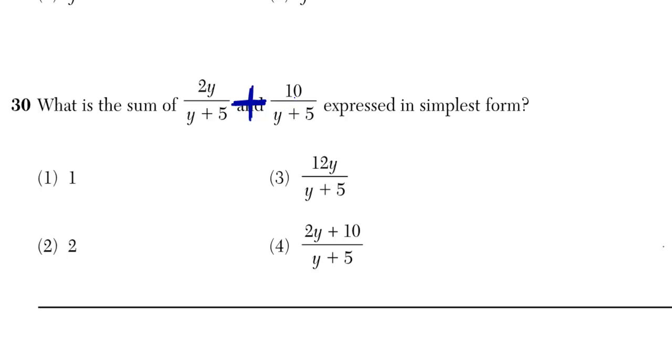So when they have the same bottom, you just add the tops and you keep the bottom. So I keep the bottom as y plus 5, but I now add the top, so I do whatever 2y plus 10 is.